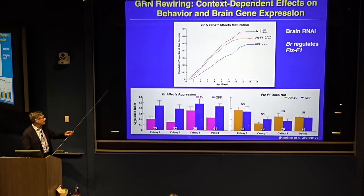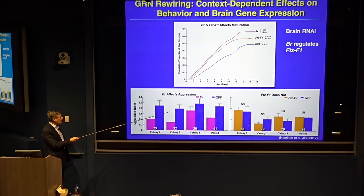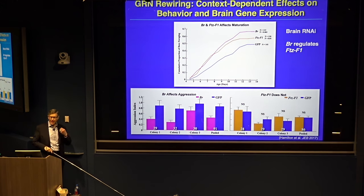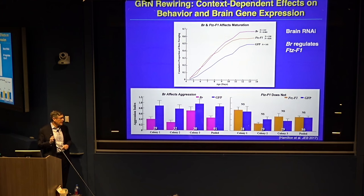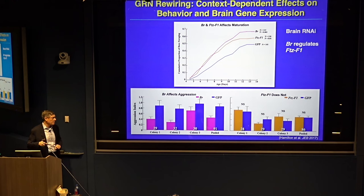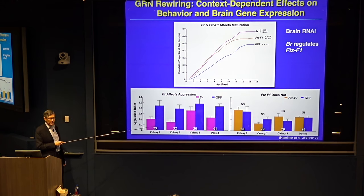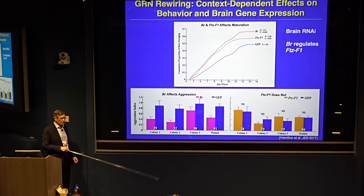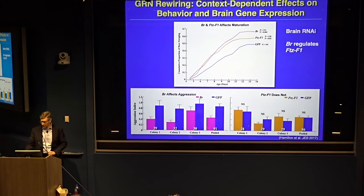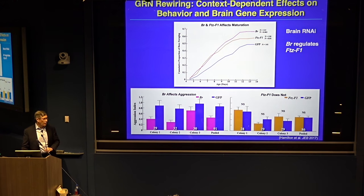Broad did affect aggression. This is a dish bee assay based on nestmate recognition — bees can distinguish relatives from foreign bees and show aggression toward an intruder. When we knock down broad expression, it affects aggression — we see a decrease. But FTZF1 has no effect. This gives us evidence for a causal relationship predicted by gene expression via a GRN.